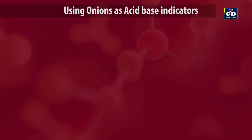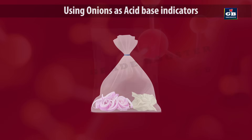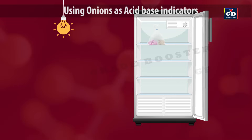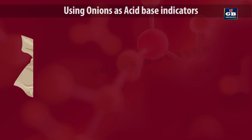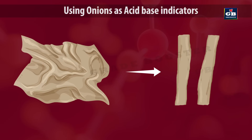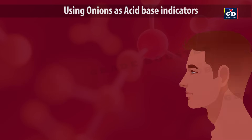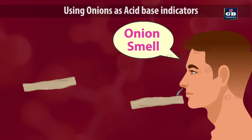Using onions as acid-base indicators: First, take a polythene cover and place some chopped onions in it. Place a small piece of cloth in the same cover along with onions. Now tie the cover using a thread or tape. Place this packet in the refrigerator for the whole night. On the next morning, take out the cloth from the cover. Cut two strips from the cloth as shown. Now smell these two strips of cloth. You will get onion smell from both the strips.